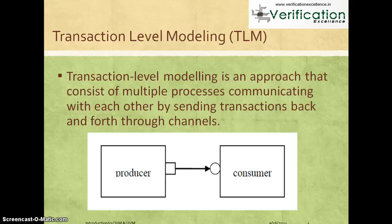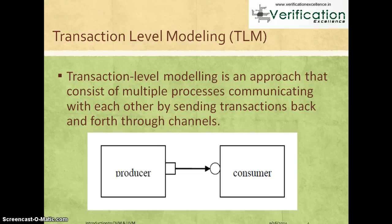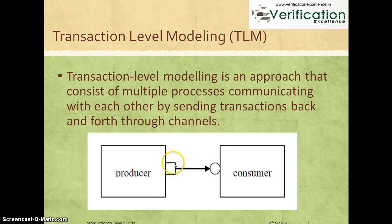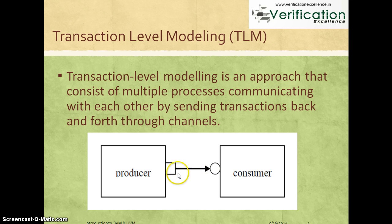A typical example is a producer-consumer model, where you have a producer component that produces some information and passes it to a consumer component. Instead of modeling all the information flowing between producer and consumer at a signal or bit level, you group everything into a transaction and use a channel — a queue, mailbox, or similar mechanism — to pass transactions between them. This modeling concept is called transaction level modeling.